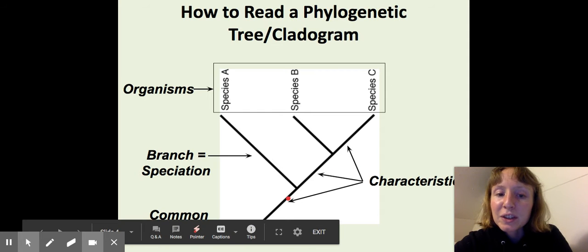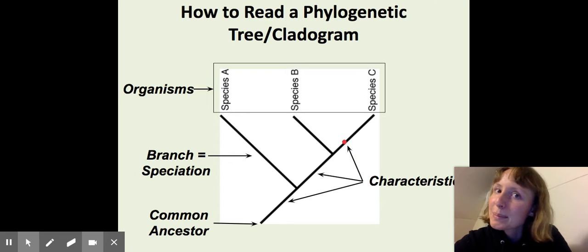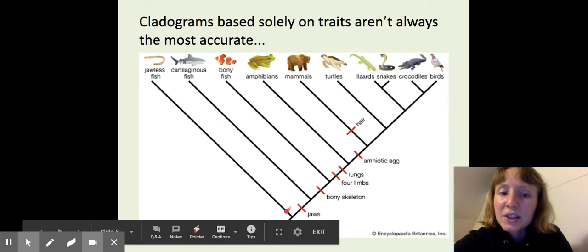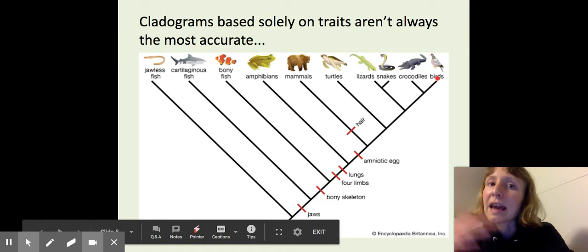So in this way, if a characteristic was shown right here, it would apply to all three species. If it was shown up here, it would only apply to species C. For example, in this diagram, the common ancestor was a vertebrate and then different traits arose over time that applied to everything else that came after.